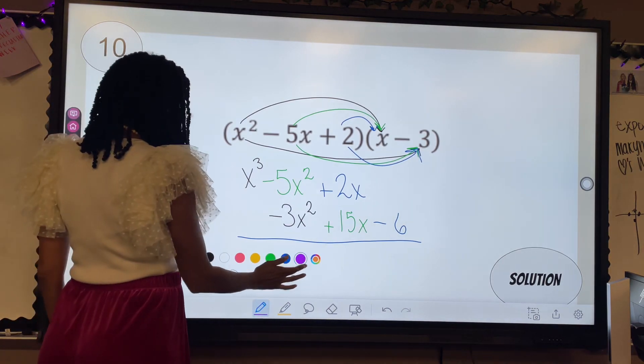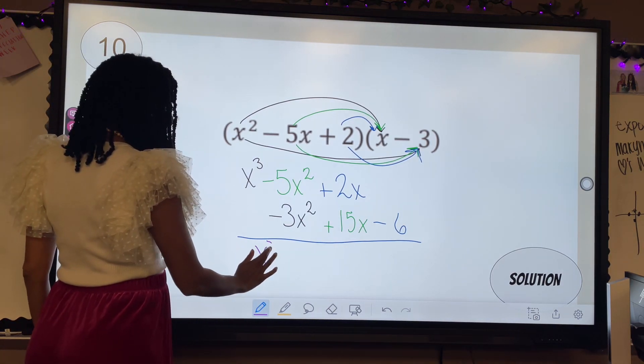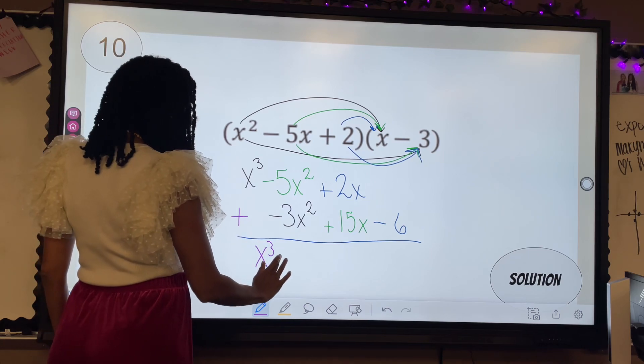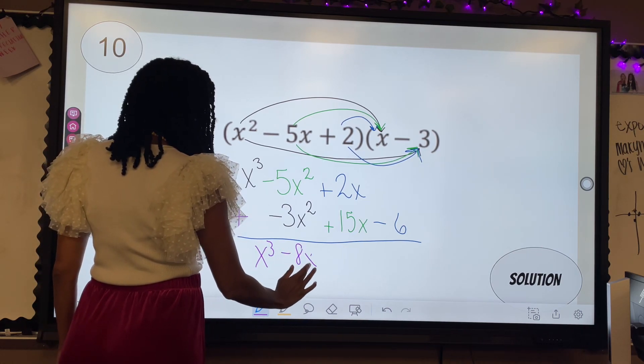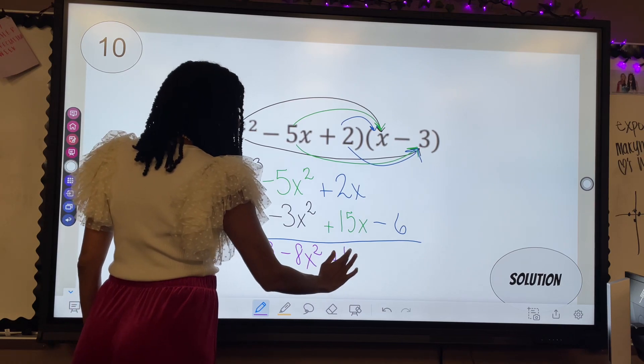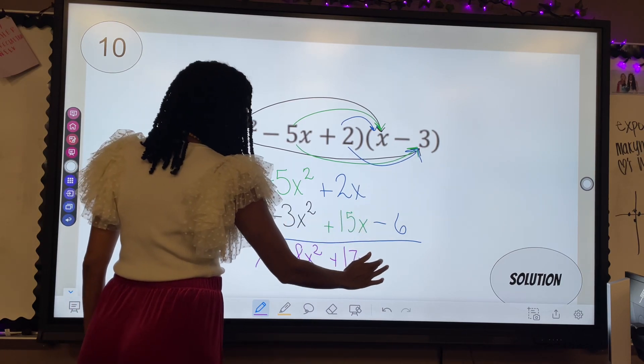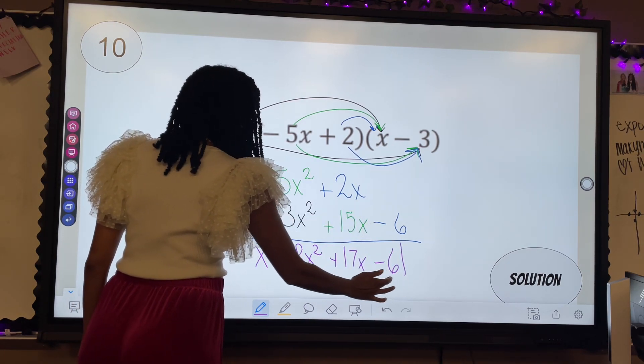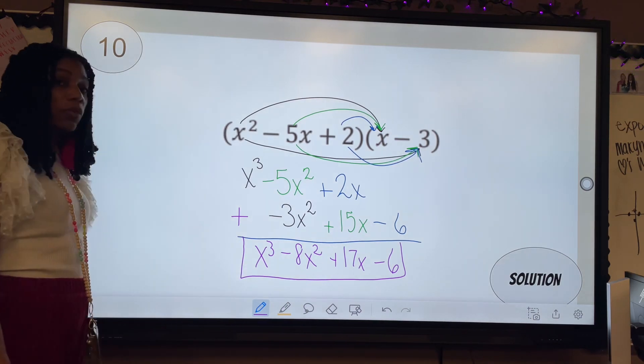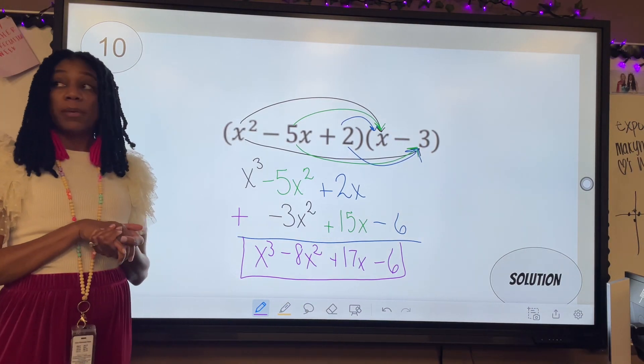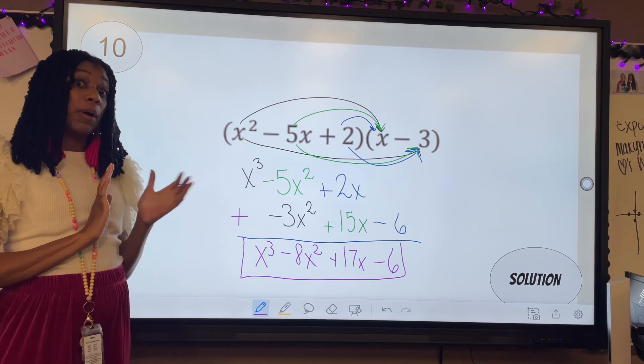And my final answer ends up being x to the third plus negative eight x squared, two plus 15 is 17x. And then zero plus negative six is negative six. And there's your final answer using the distributive property to multiply polynomials.